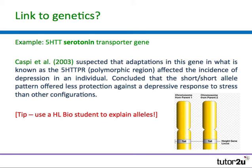The link to genetics for this learning outcome about neurotransmitters is the 5-HTT serotonin transporter gene. Caspi suspected that adaptations in the polymorphic region (PR) of the 5-HTT gene affected the incidence of depression. There's a possibility of having a short allele on both chromosomes, a short-long allele, or a long-long allele. The long-long allele pattern seems to offer most protection against a depressive response to stress, and the short-short allele seems to offer very little protection.